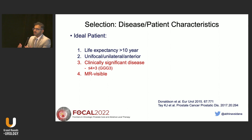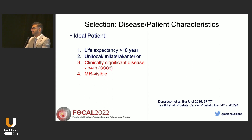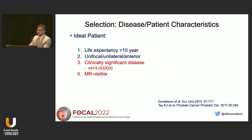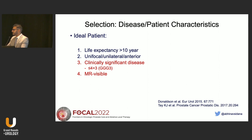There is some controversy about using focal therapy for grade group 1 disease. Experts agree that for low-volume grade group 1 disease — which are ideal patients for active surveillance — focal therapy should not be offered. It should be offered for more clinically significant disease: either high-volume grade group 1, or grade group 2 and grade group 3 disease.